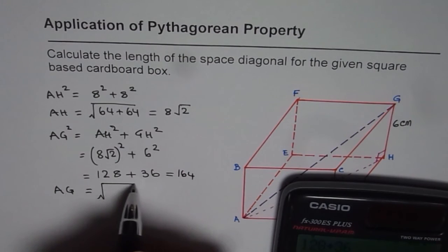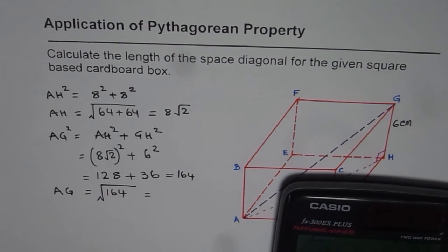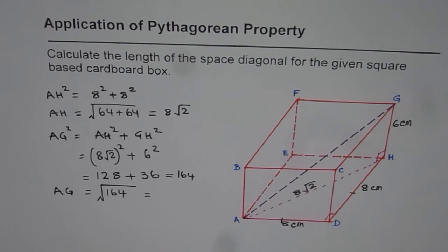So it is 128 plus 36 which is 164. So we have to find square root of 164. That is equal to, square root of 164 is equal to 12.8.